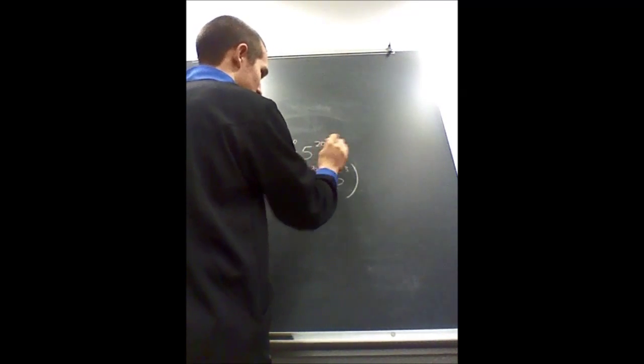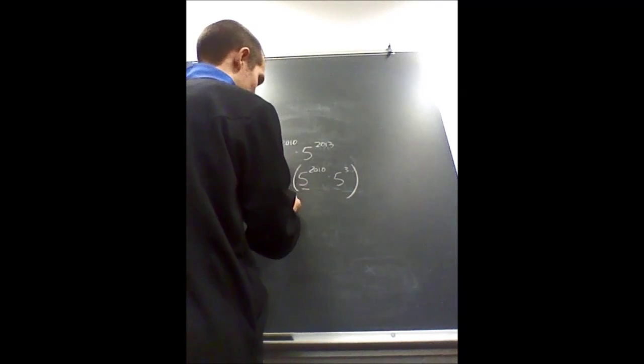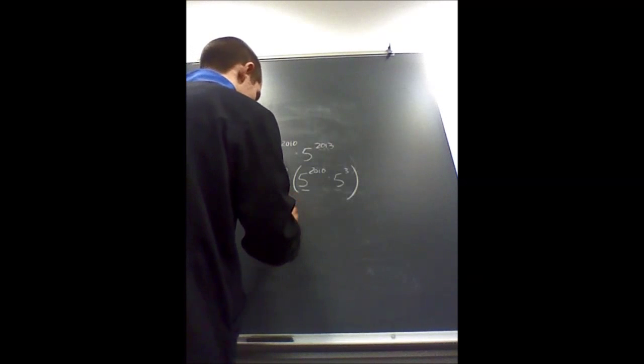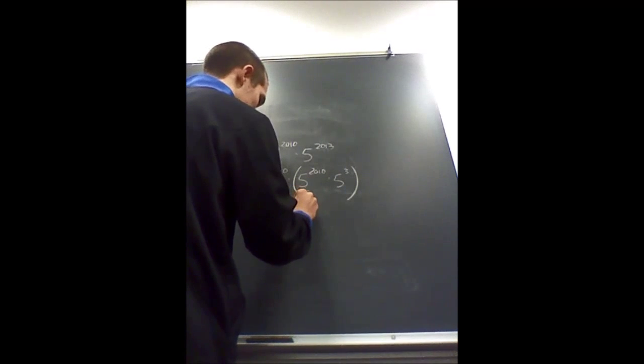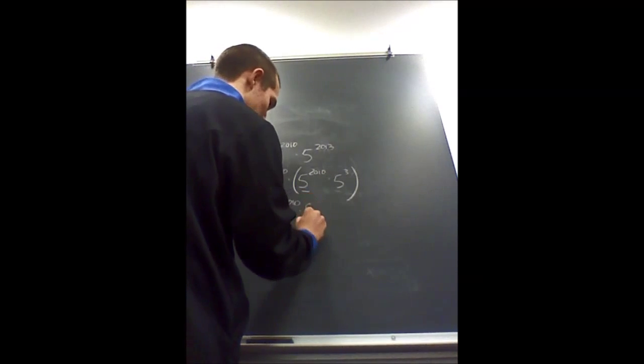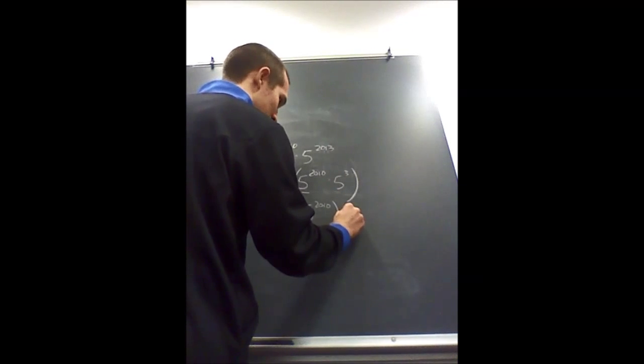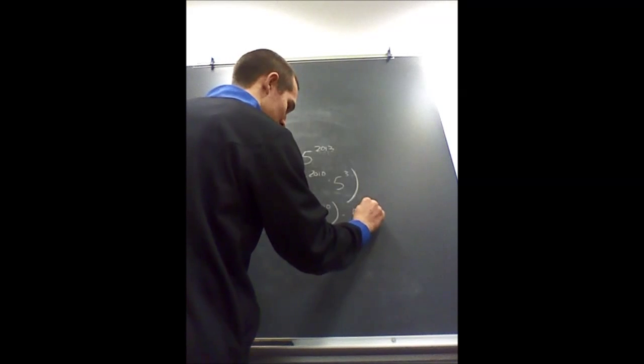So this would be equivalent to 5 to the 2013. Then since they are all being multiplied by each other, I can group 2 to the 2010 with 5 to the 2010 times 5 cubed.